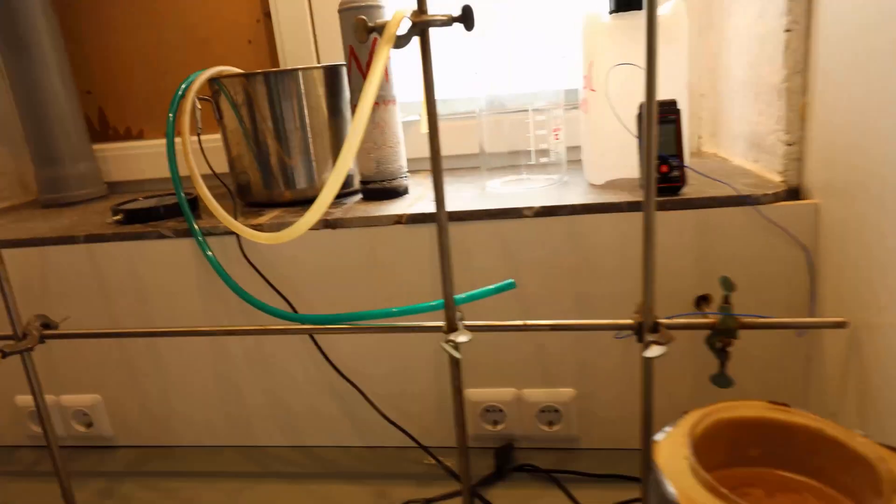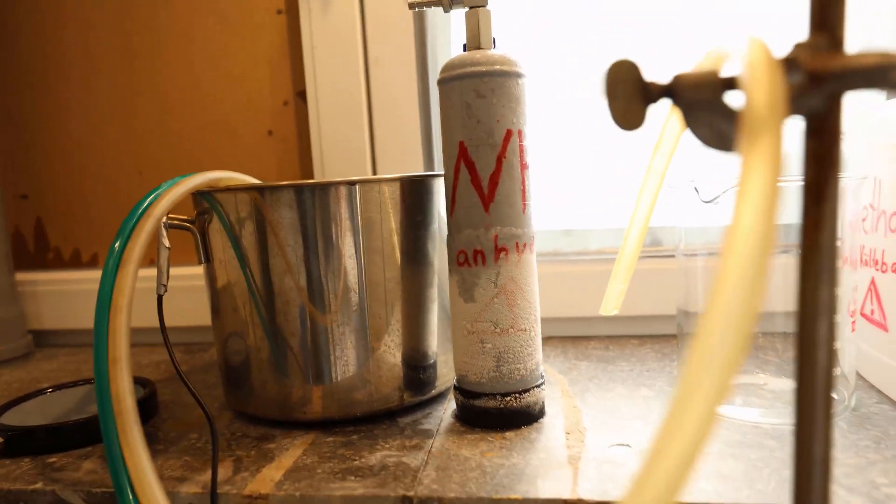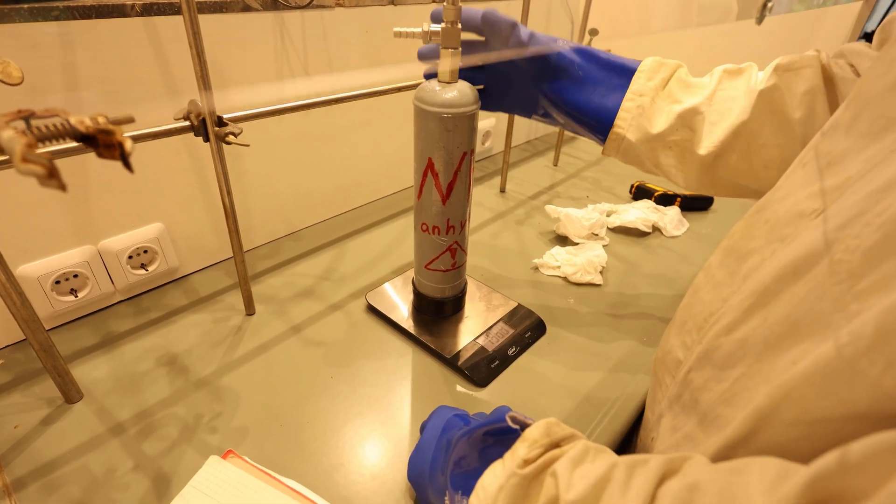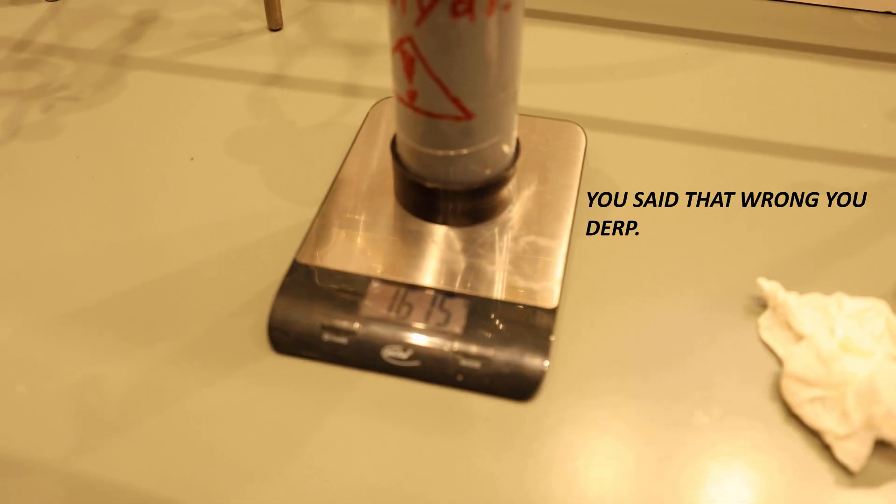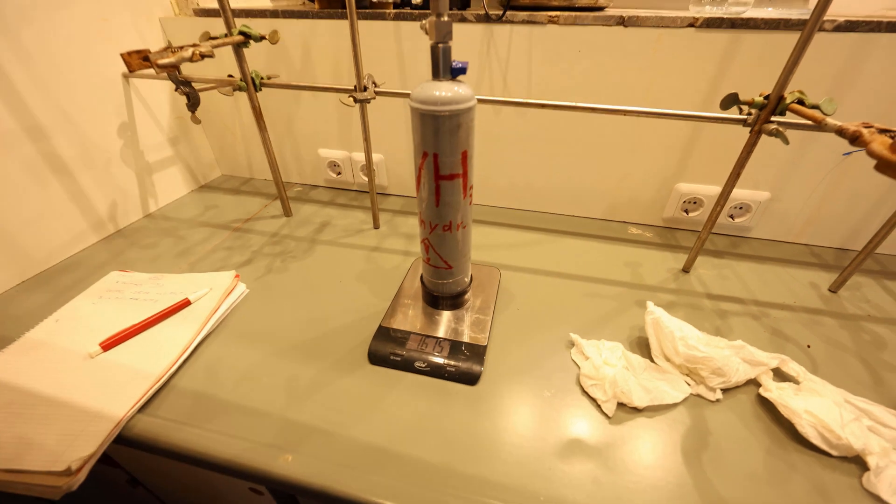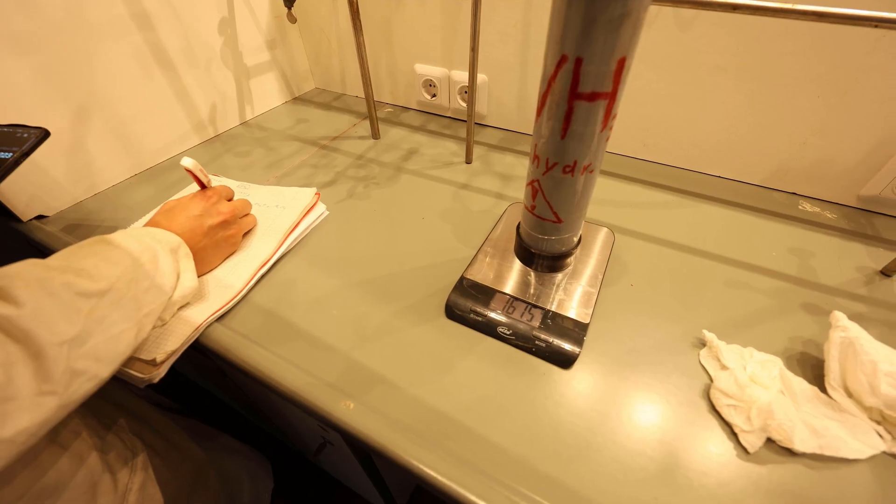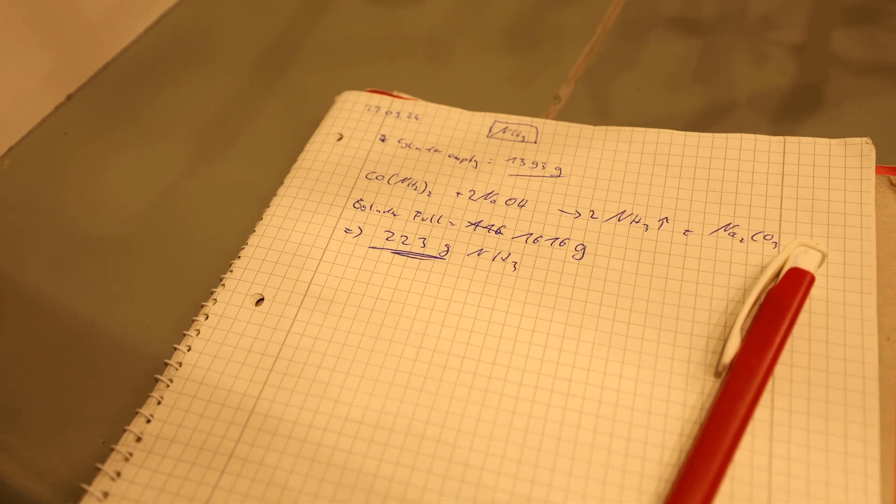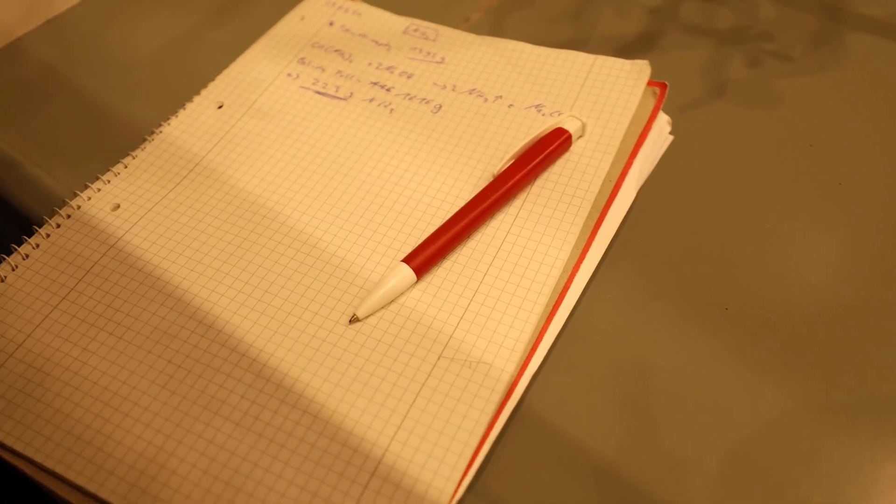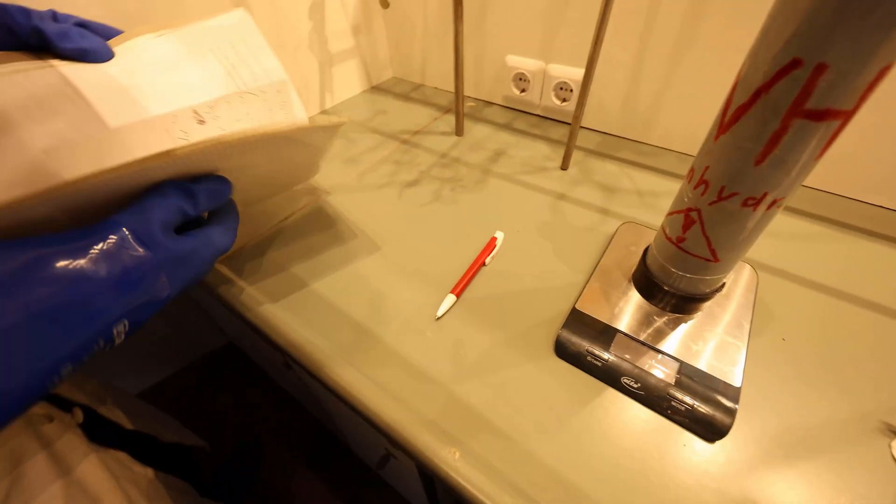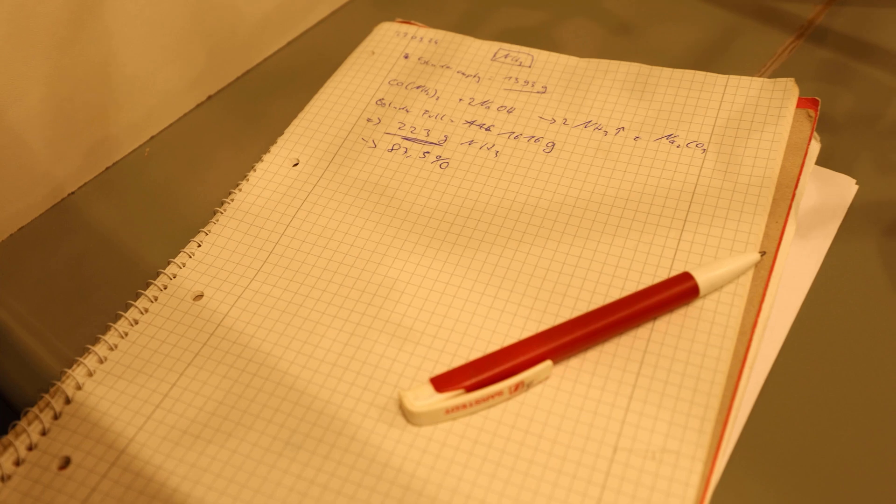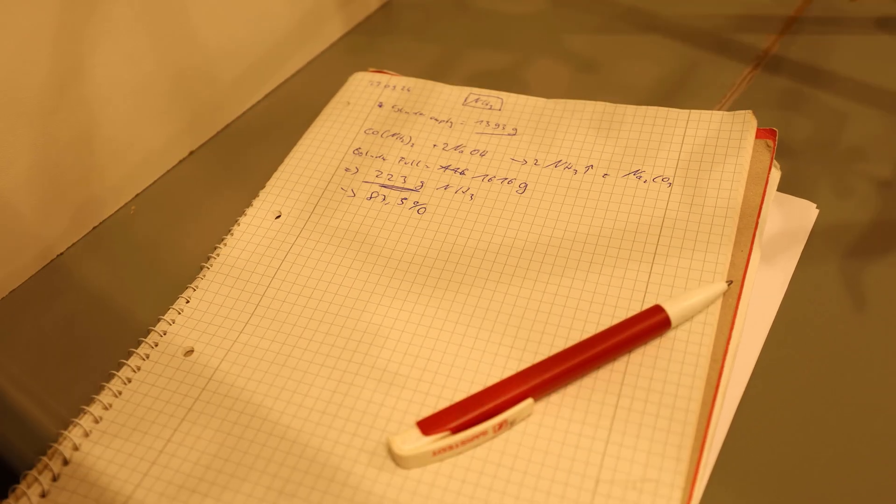All right, now that's cleaned up and this bottle is slowly warming up. Moment of truth, how much do we have now? 615 grams. Now to the calculations on how much this actually is. 223 grams. This is from last time, 226 grams. It seems that is 87.5 percent yield exactly. Pretty good, nice!